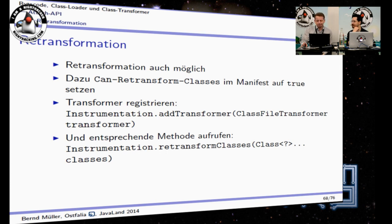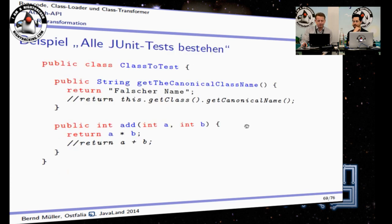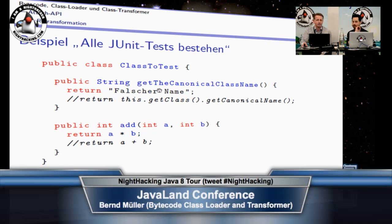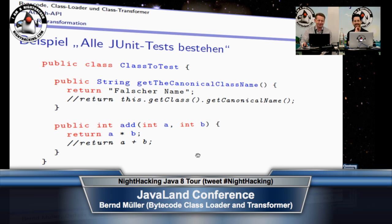So what can we do with this? I want to show you how you can pass all your unit tests. This is a class which will be tested, and there are two simple methods. One gets the canonical class name, but I will return the wrong name. There is also an add method which is assumed to return the sum, but I will return the product. So I will show you how the unit tests will pass.